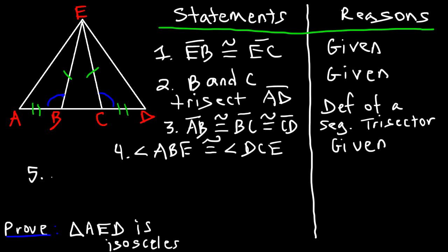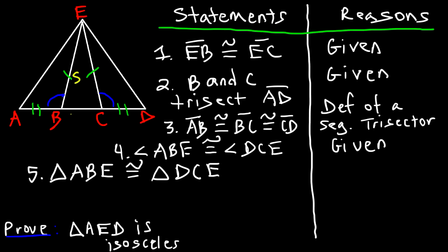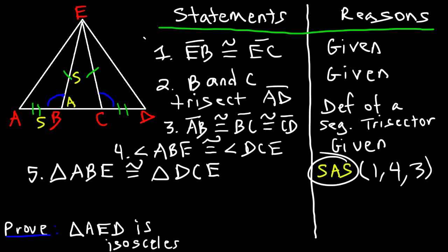Statement five: triangle ABE is congruent to triangle DCE. The reason: SAS postulate — we have a side, an angle, and a side. In SAS order: the first side EB≅EC came from statement one, the angle ABE≅DCE came from statement four, and the side AB≅CD came from statement three. So the reason is SAS, referencing statements one, four, and three in that order.